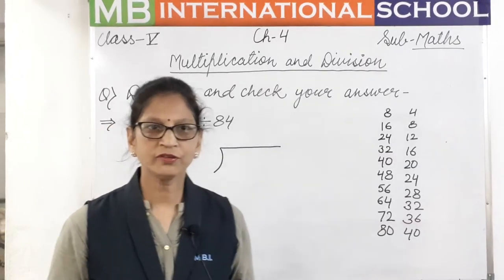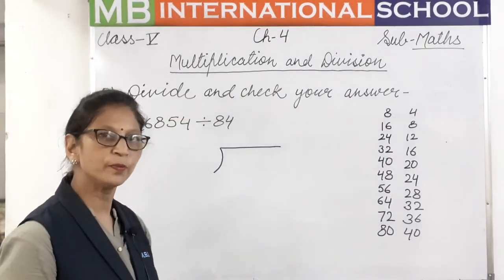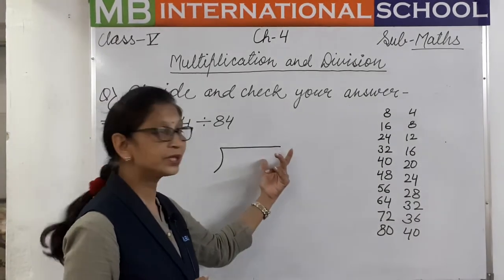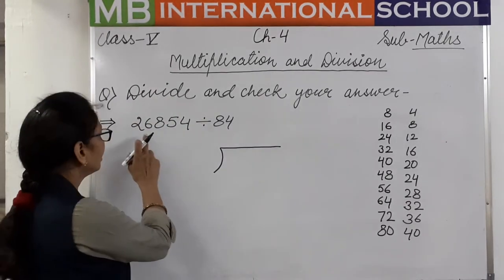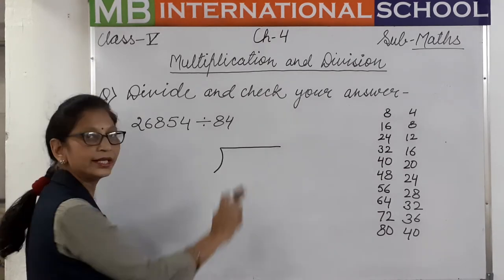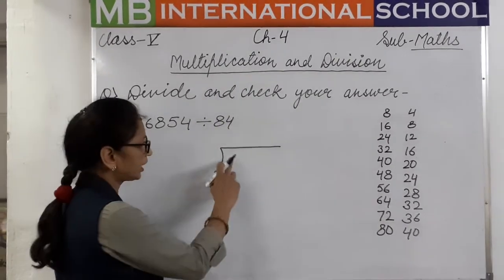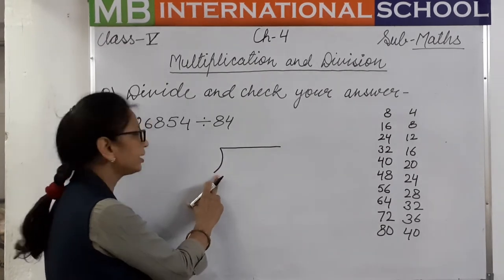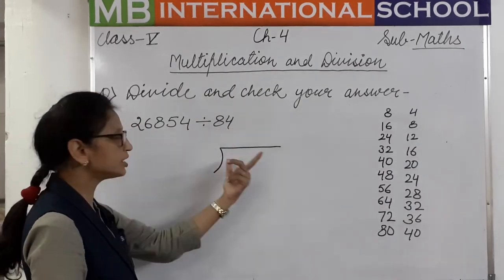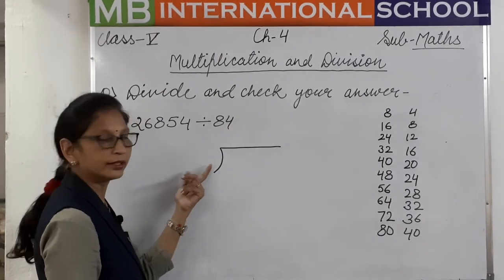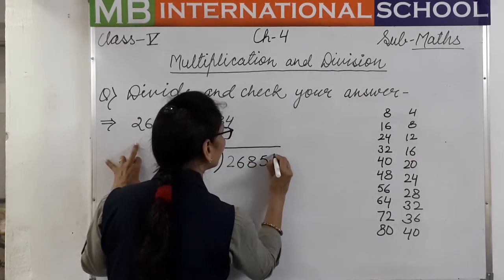Now we will do division. Our question is: divide and check your answer. Iska matlab hai pehle to divide karna hai, uske baad check bhi karna hai. Our question is 26,854 divided by 84. To divide we make the division format — the dividend goes inside and the divisor outside. So we write 26,854 inside and 84 outside.